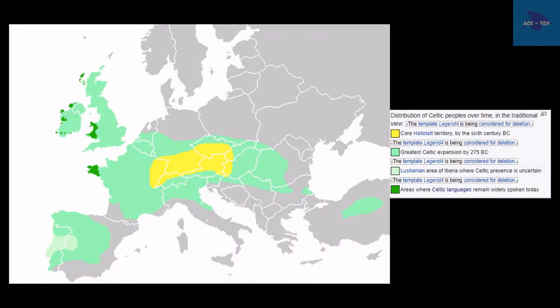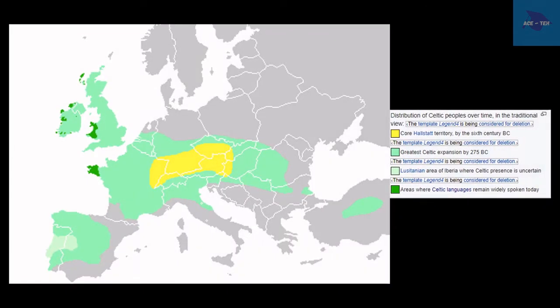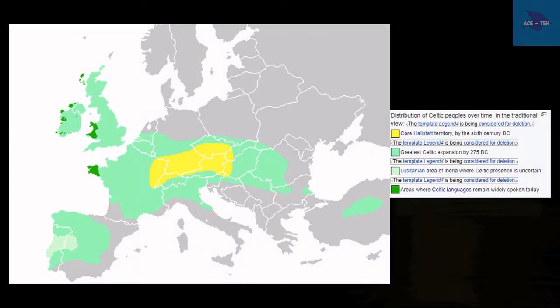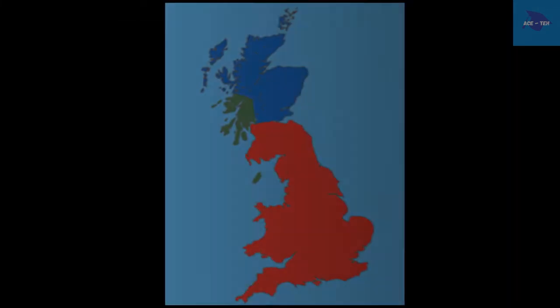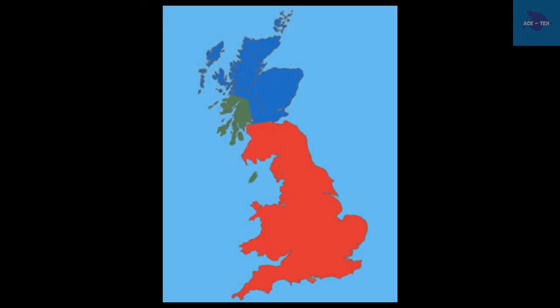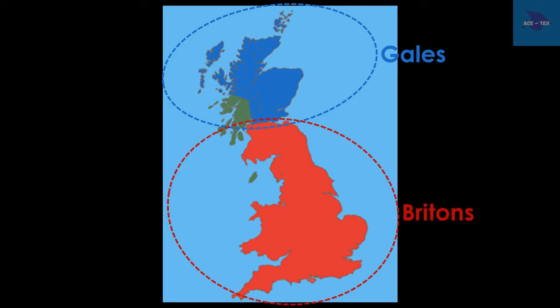The Celts are important in British history because they are the ancestors of many of the people of today's UK. Celtic languages are still spoken. The Celts were made up of numerous tribes. The earliest group of Celts to arrive were the Gaels. They invaded the western and northern parts of the country. The Britons, another tribe of the Celts, came next. They occupied most of present-day England and Wales.